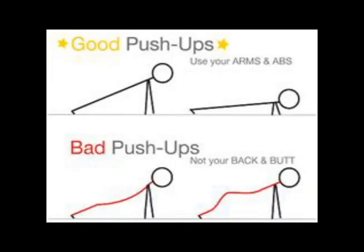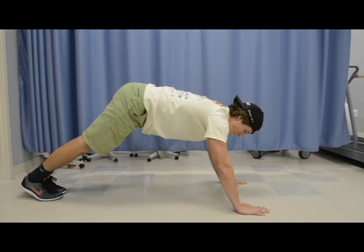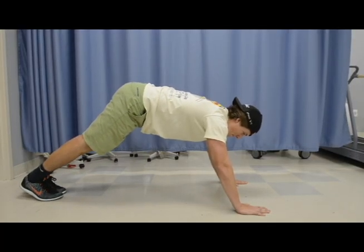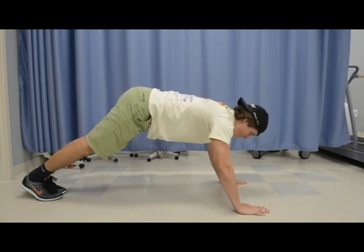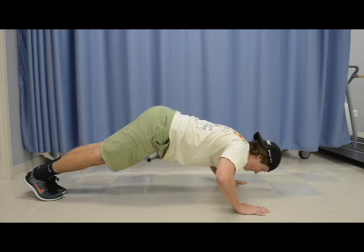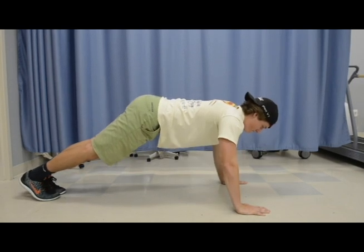To demonstrate some inappropriate form and technique where repetitions wouldn't count, we will show you what some things may look like. Here you see the subject has an arched back where his bottom is up in the air and his back is not flat. This would be inappropriate form — this repetition would not count.